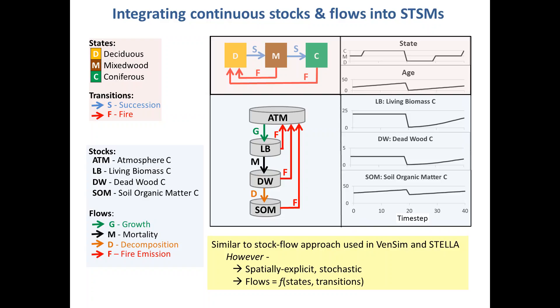First, like the states and transitions, the stocks and flows are spatially explicit and their levels can be modeled stochastically. Second, and probably most importantly, we can make the flows in our stock-flow model conditional upon states and transitions in the state and transition side of the STSM. For example, in a particular time step you might have a fire transition that occurs on a cell — you can use that to trigger a series of fire emission flows that move carbon from one stock to another over time in response to that transition.